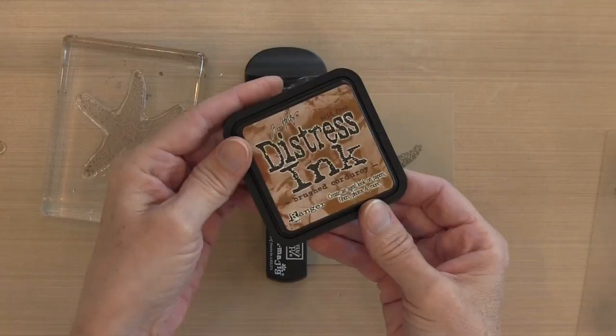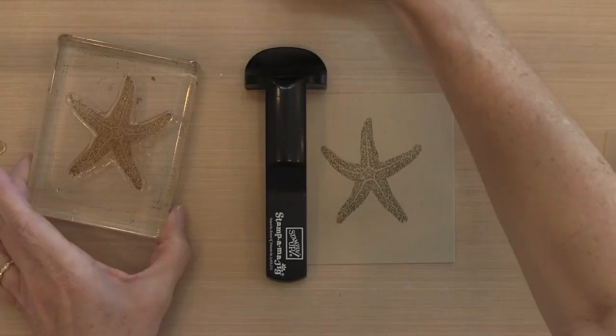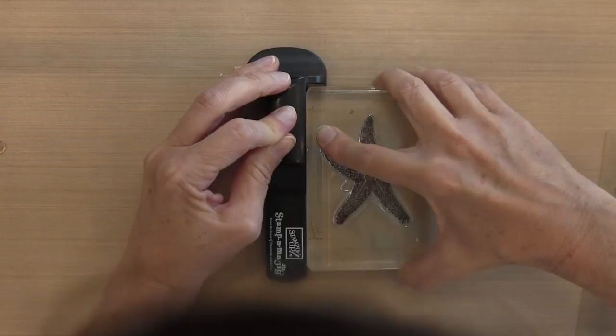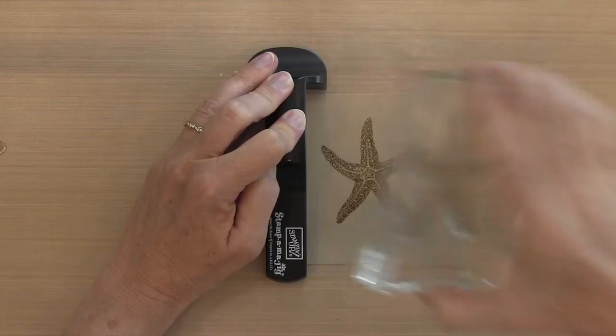I'll use my Stampin' Majig to make sure that I get right on top. You want to hold it and then push all the way down, and then when you pull it up, make sure you pull it straight up off your cardstock. It looks really good with just these two stamps, but I wanted to add a little bit more detail.